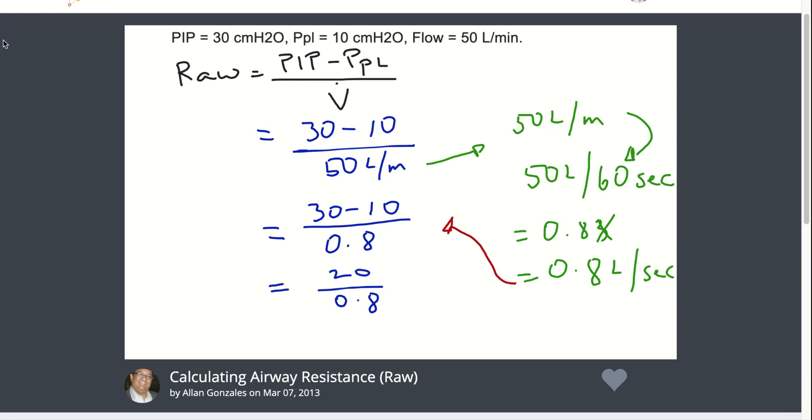Subtracting the numerator first, you have 20 over 0.8, which will yield 25 centimeters of water pressure per liter per second. And this is your airway resistance.